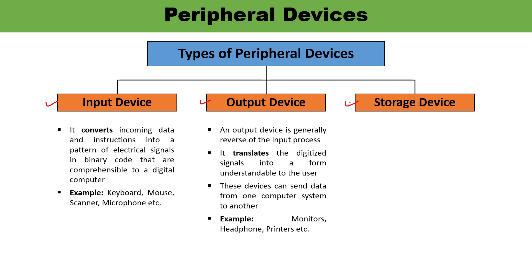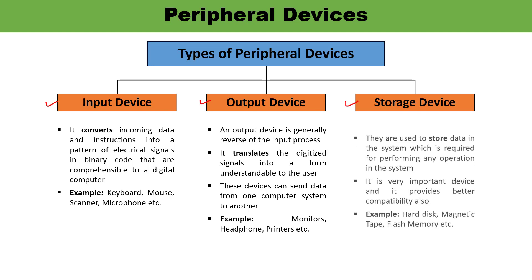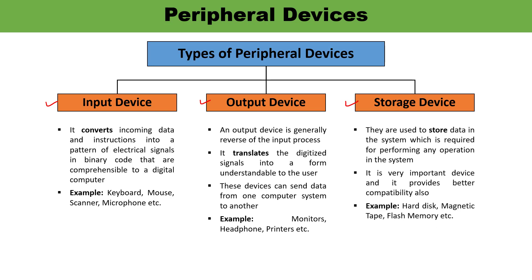The third type is the storage device. From the name itself, it is clear that these devices are used to store data in the system. Sometimes this data is required for performing operations, and sometimes it needs to be accessed after a certain time interval. Storage devices are very important and provide better compatibility. Common examples include hard disk, magnetic tape, and flash memory.